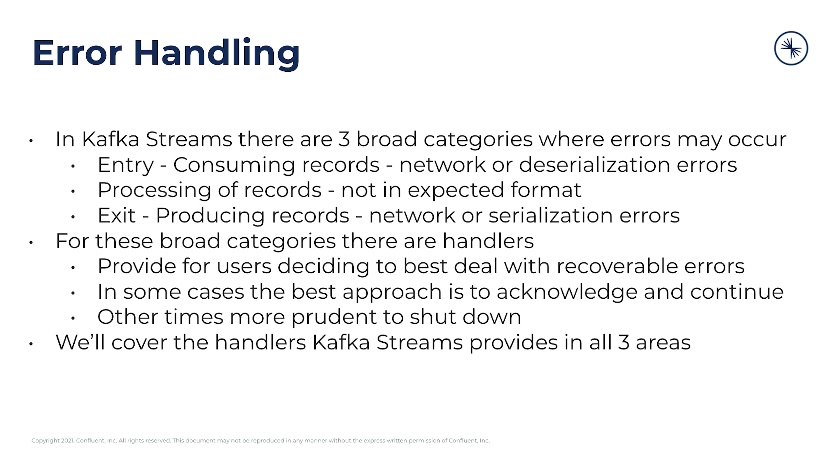Lastly, there is the exit point. This is when you are producing records and they are leaving Kafka Streams — kind of the flip side of the consumer. The producer client also connects across the network and suffers from similar disruptions. And likewise, it has to serialize the records, so any serialization exceptions fall under the exit or producer category of exception.